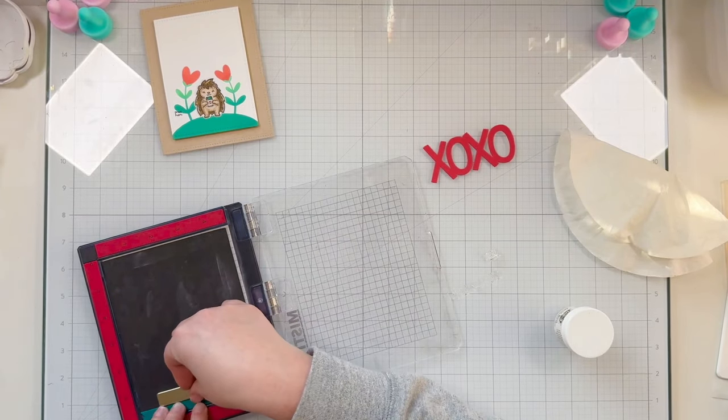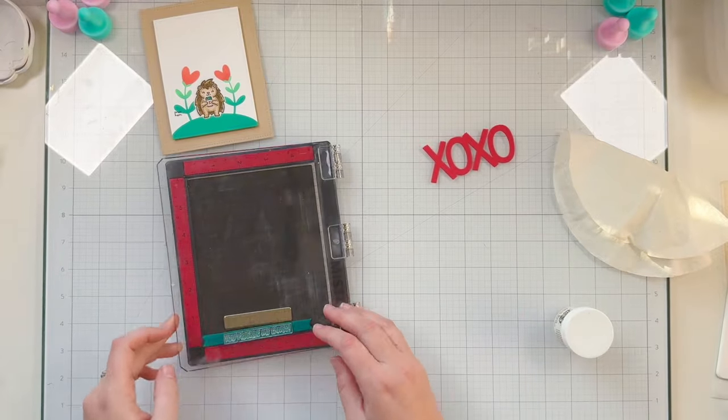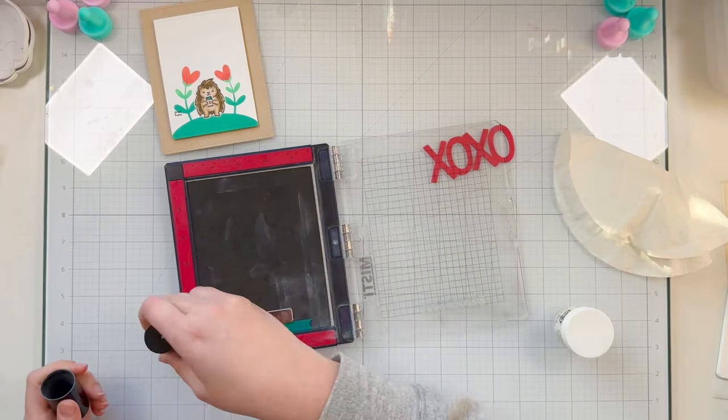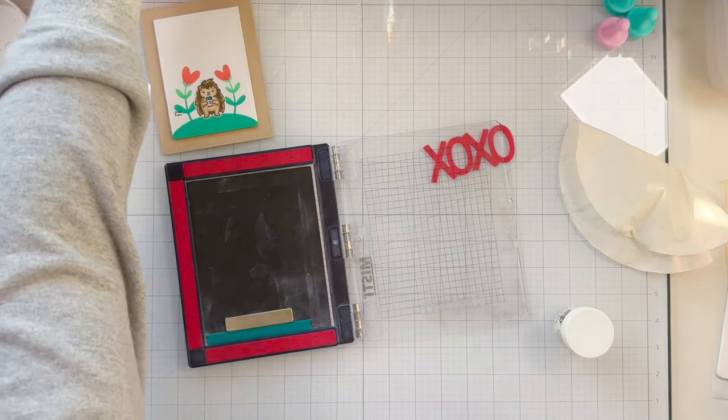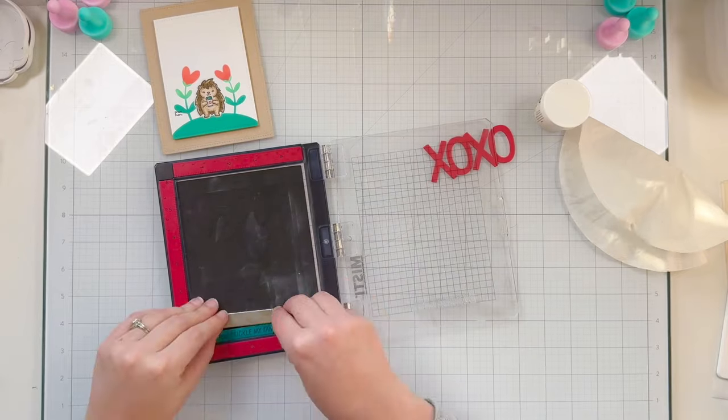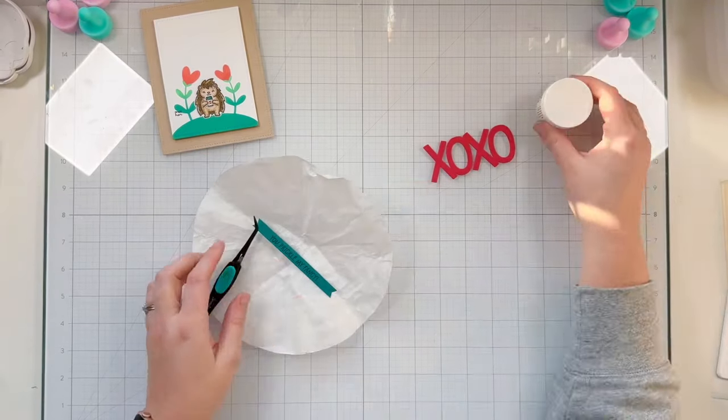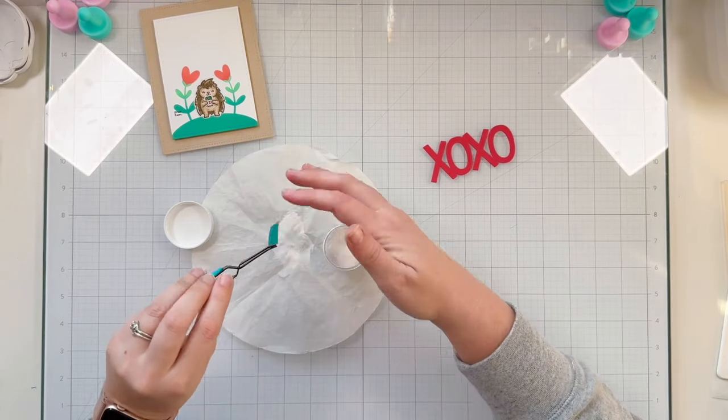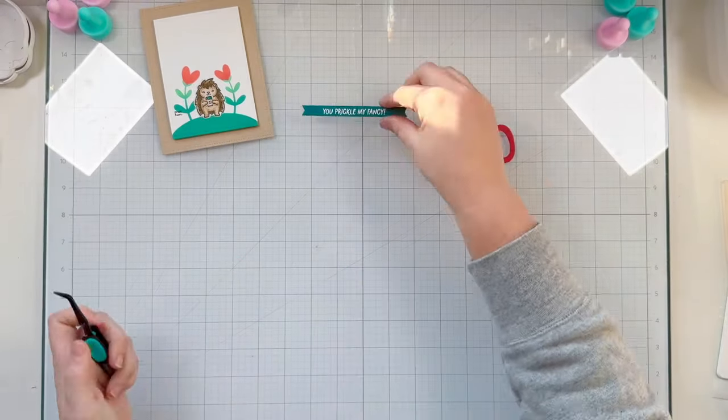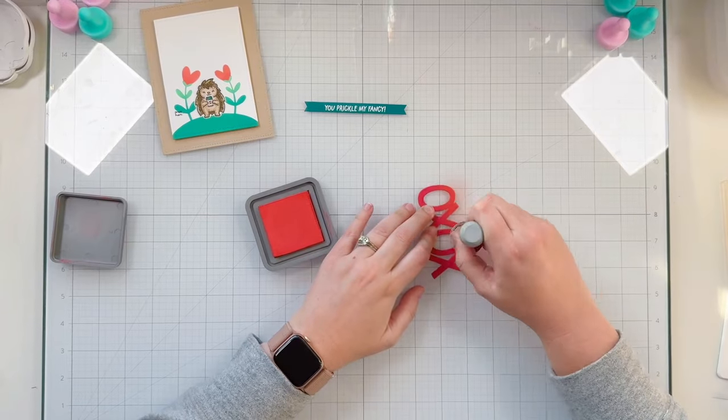I'm going to die cut the XOXO out of some cardstock that matched the hearts pretty well and then I did the banner out of some green cardstock. My XOXO is just die cut. I'm going to add a little bit of ink to it in a moment but my sentiment I wanted to line up on the banner using my MISTI to make sure it's as centered as possible and I'm going to emboss my sentiment in white. I'm stamping the You Prickle My Fancy sentiment. I added my anti-static powder and then I'm stamping twice with clear embossing ink. I'll use my coffee filter and some super fine white embossing powder to cover my sentiment.